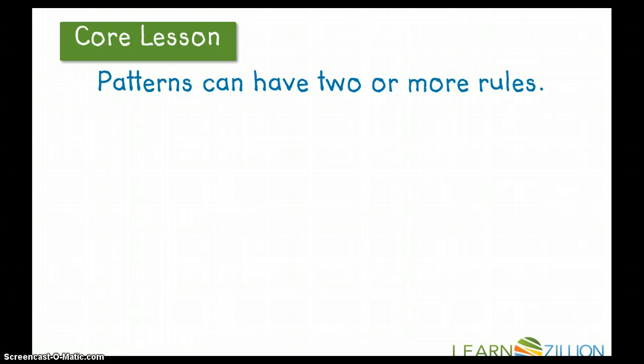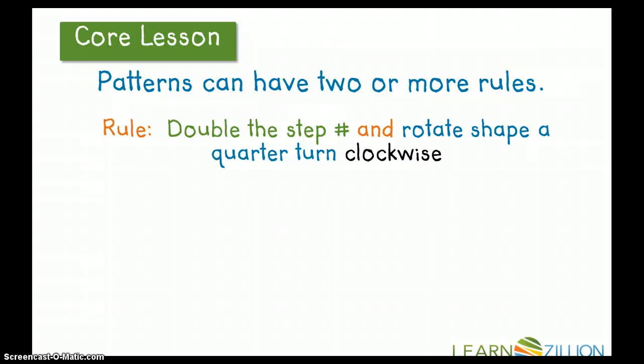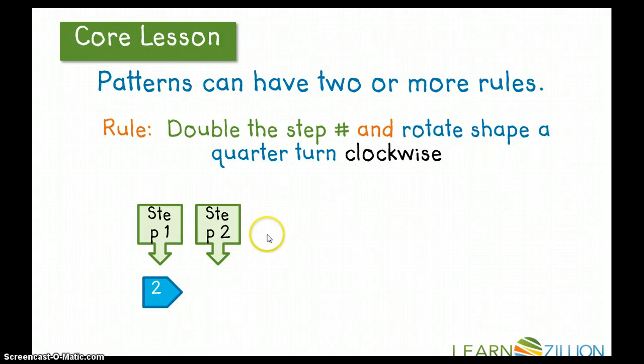Patterns can have two or more rules. So in this case, our rule for our first example is double the step number and rotate a shape a quarter turn clockwise. So my step 1, I have a 2, and my arrow shape is pointing to the right. Step 2, I need to double my step number and rotate a shape a quarter turn clockwise. So in my step 2, I need to double my step number. My number is 2. Two 2s is 4. But take a look. I didn't rotate my shape a quarter turn clockwise. My shape is still going the same way. I need to rotate a quarter turn clockwise so that my arrow is pointing down.